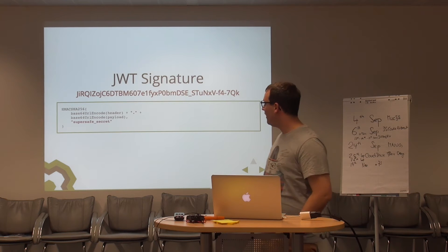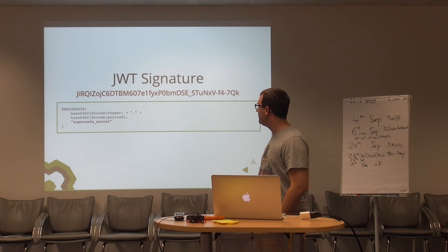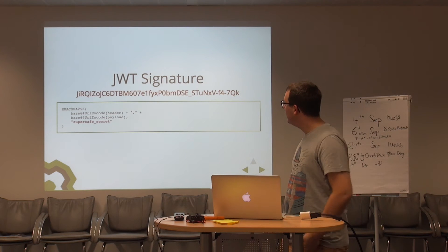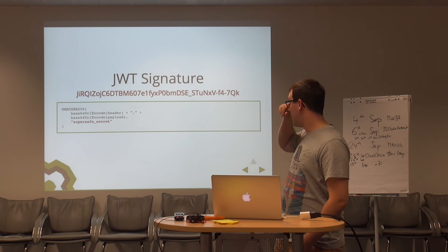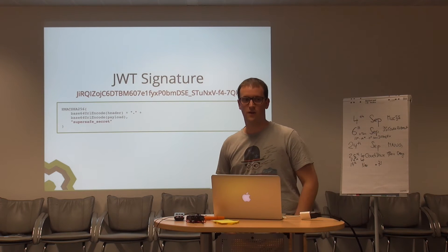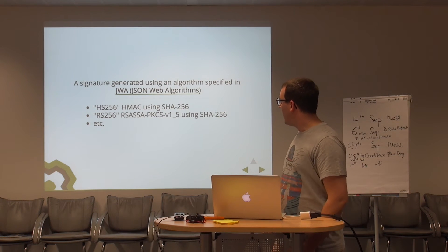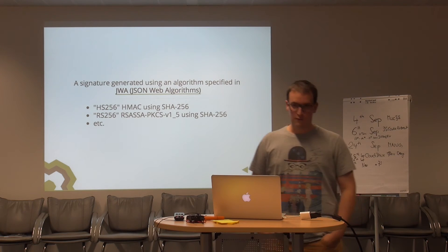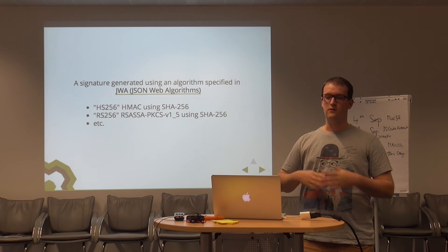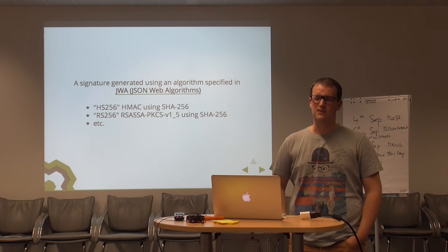The JWT signature — the standard says there must be HMAC-256. That's the standard and each library should have implemented that. It's generated by taking all the base64 parts and putting them through the hash function with some secret. There are quite a lot of other algorithms available, also for asymmetric signing, which is nice if you don't want to share the secret across services. The authentication server generates the signature with a private key and just shares public keys on the consuming service.